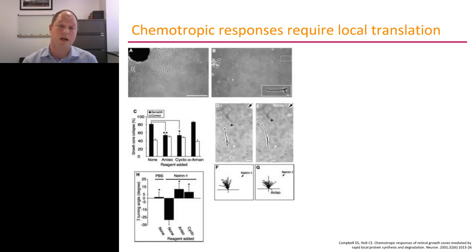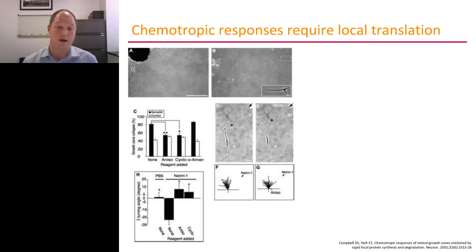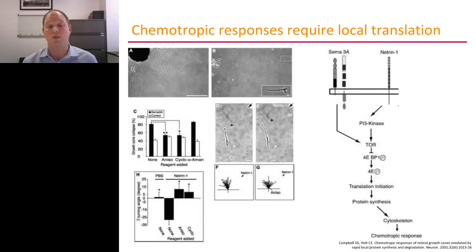If you apply Netrin in a 45 degree angle to one of these cut axons — and keep in mind there is no cell body anymore — the axon will react by turning away from the source of Netrin. If you do this with many axons, you find that the average turning angle is negative. However, if Christine Holt applied anisomycin, a protein translation inhibitor, axons didn't care about the Netrin gradient anymore at all, and there is no bias for a turning angle. The same was true not only with anisomycin but also with cycloheximide, another protein translation inhibitor. Because the cell bodies had been cut away, whatever translation is being inhibited has to be necessarily local translation.